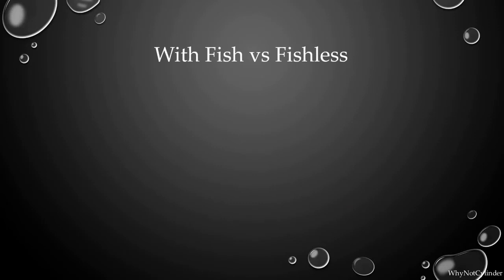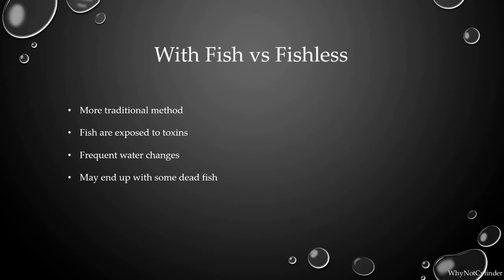So there's two ways to cycle your tank. The first is with fish. It's a more traditional method but you are exposing your fish to toxins and you might end up with some dead fish. And the process that I'm using is fishless. So you use products such as ammonia and beneficial bacteria supplement to cycle your tank. It might take a little bit longer but the upside is that you end up with no dead fish. I hope that makes sense and if you would like more resources you can check out the description below.